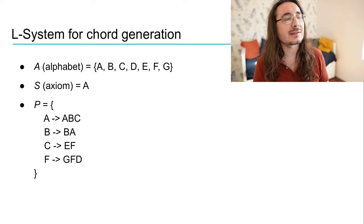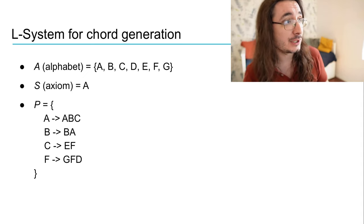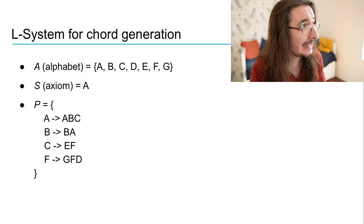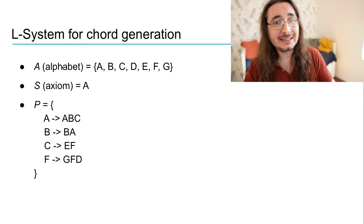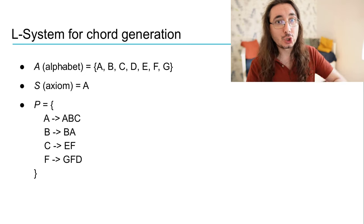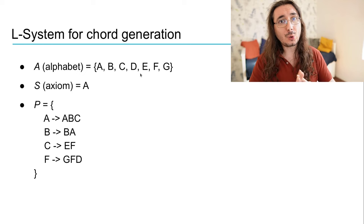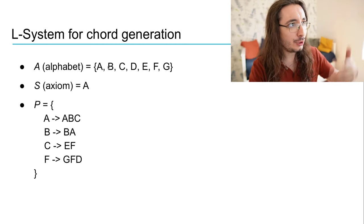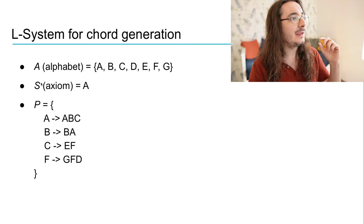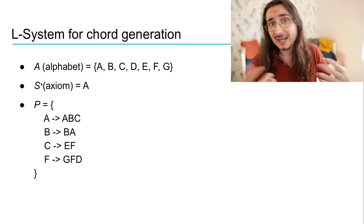Let's take a quick look at the L-system that we want to implement for generating chord progressions. The alphabet is made up of a number of symbols that map directly onto chord names — A, B, C, D, E, F, G — these are all the diatonic chords you can create on the C major scale, like A minor, B minor, C major, and so on. The starting symbol, the axiom for us, is going to be A minor.